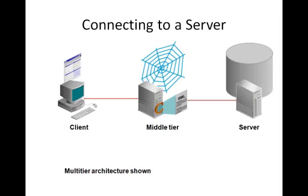The third way you can connect is by using a web server or an application server. If you log into a web server, there is an application server at the backend making the connection on behalf of the web server. When connecting through the network, there is a middle tier involved, such as WebLogic or any homegrown middle tier. Oracle's middle tier is WebLogic — Oracle acquired this company and now develops WebLogic, which underpins all the grid components in 10G and 11G.